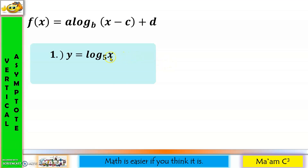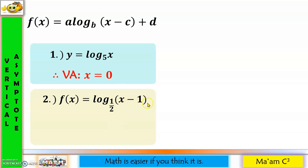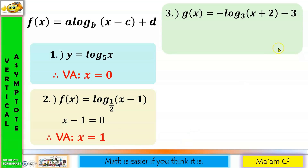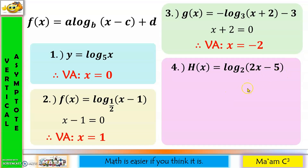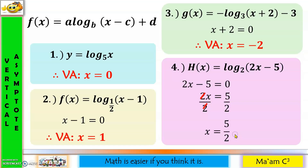For the first asymptote example, the argument is x, so x equals 0 is the vertical asymptote. For the next, the argument is x minus 1; setting it to zero gives x equals 1. For x plus 2, setting it to zero gives x equals negative 2, so the vertical asymptote is x equals negative 2. For 2x minus 5, setting it to zero and dividing both sides by 2 gives x equals 5/2, so the vertical asymptote is x equals 5/2.